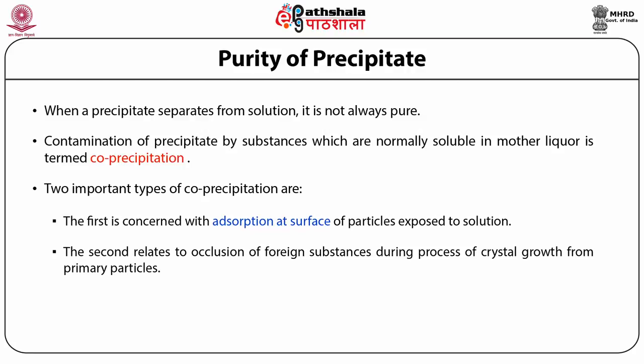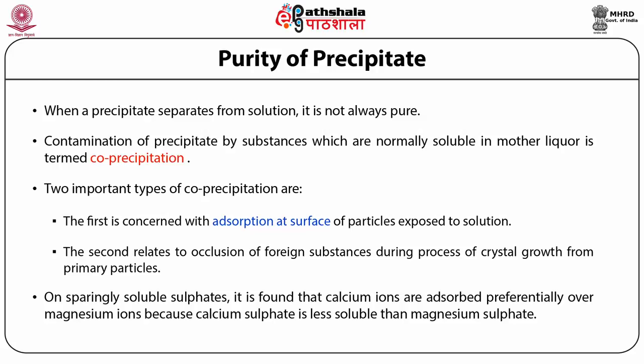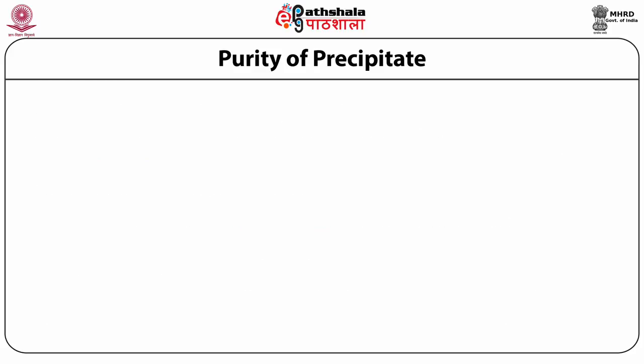With regard to surface adsorption, this will in general be greater for gelatinous precipitates and least for those of pronounced macro-crystalline character. Precipitates with ionic lattices conform to the Fajan-Shan adsorption rule, which states that the ion most strongly adsorbed by an ionic substance is that which forms the least soluble salt. Thus, on a sparingly soluble sulfate, calcium ions are adsorbed preferentially over magnesium ions because calcium sulfate is less soluble than magnesium sulfate.